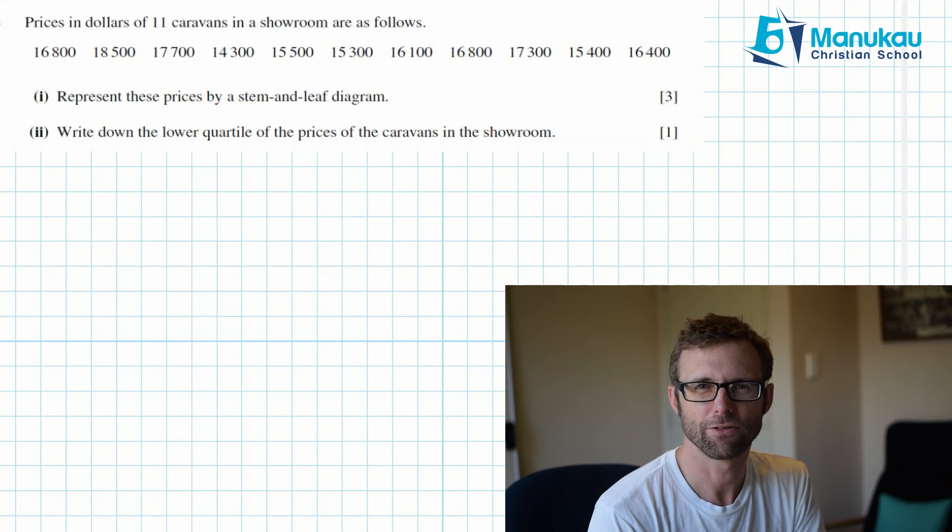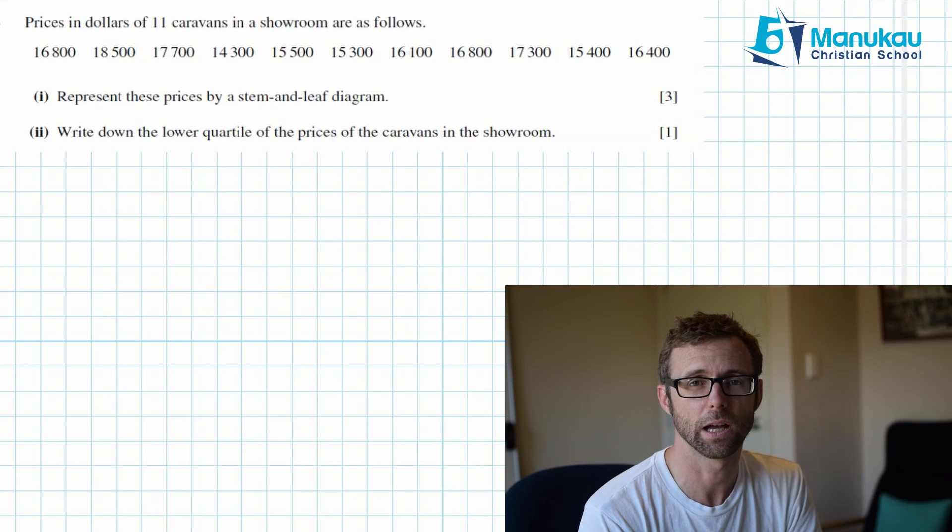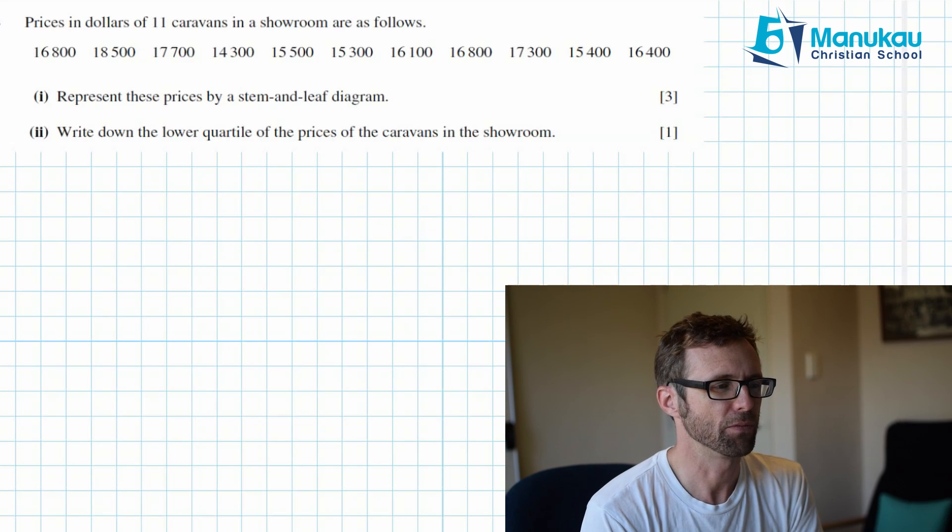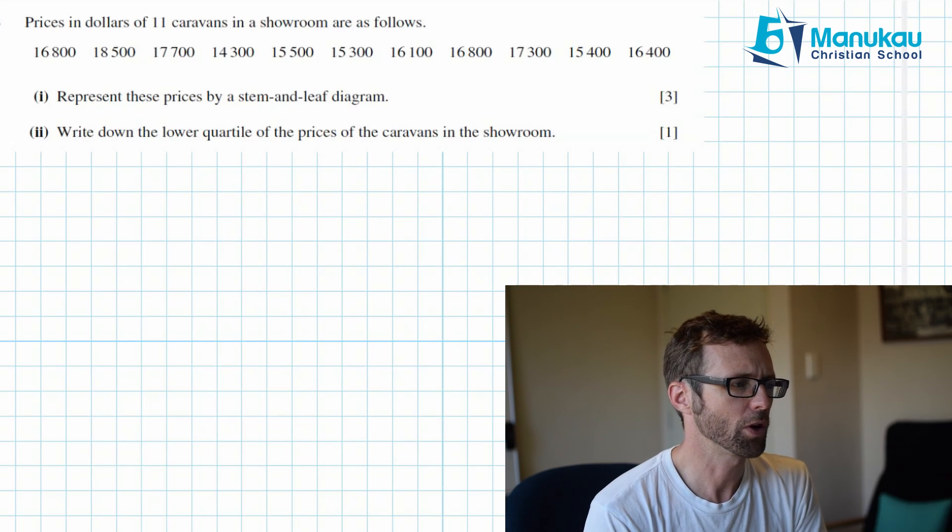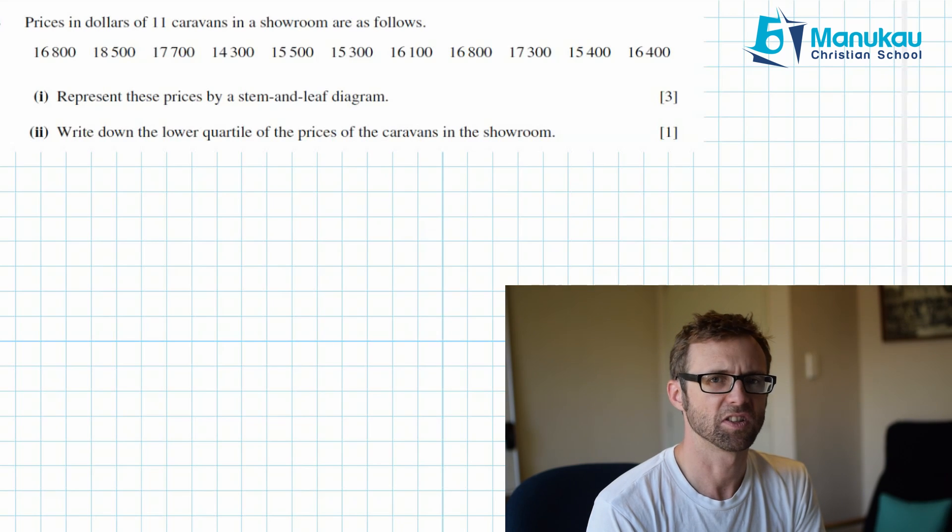And this one is dealing with data. We're going to draw a stem and leaf diagram and then we're going to work out a lower quartile from this. This is something that we had a little bit of trouble with before the holidays, so hopefully having gone over that earlier video this one will be a bit easier for you. So we've got these 11 caravans in a showroom and this is the prices of them, $16,800, etc. And we've got to represent them on a stem and leaf diagram.